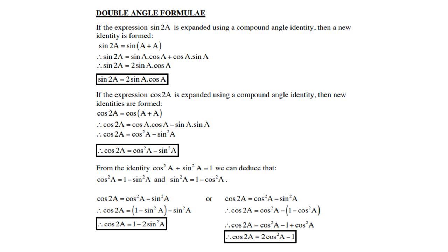Sine of 2a is the same as sine of (a + a). If you look at the sine compound rule, it will be sine a cos a plus cos a sine a. So therefore, if they are like terms, you can add them and you get 2 sine a cos a.